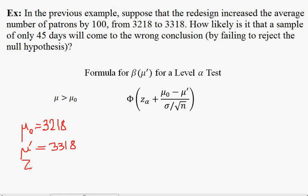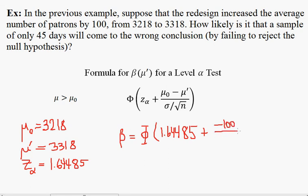Z alpha is going to be the cutoff value that we had. So 1.64485. And so beta will be equal to phi of, plus mu naught minus mu prime is negative 100, divided by 287, over the square root of 45. So phi of, we do the arithmetic, and we get the same number back again, negative 0.6925.